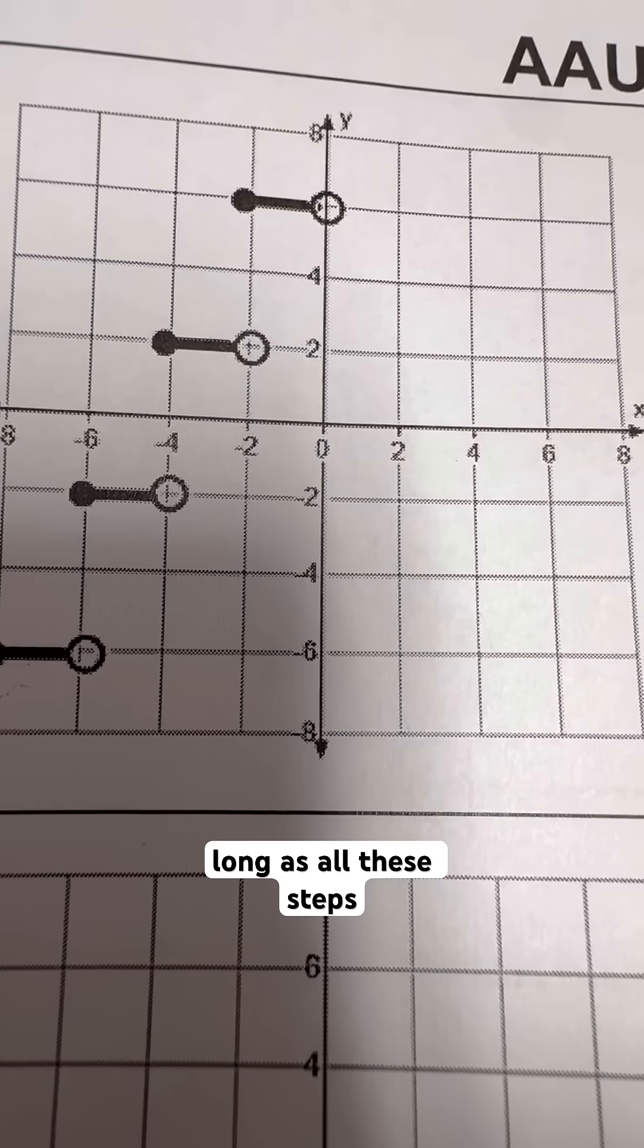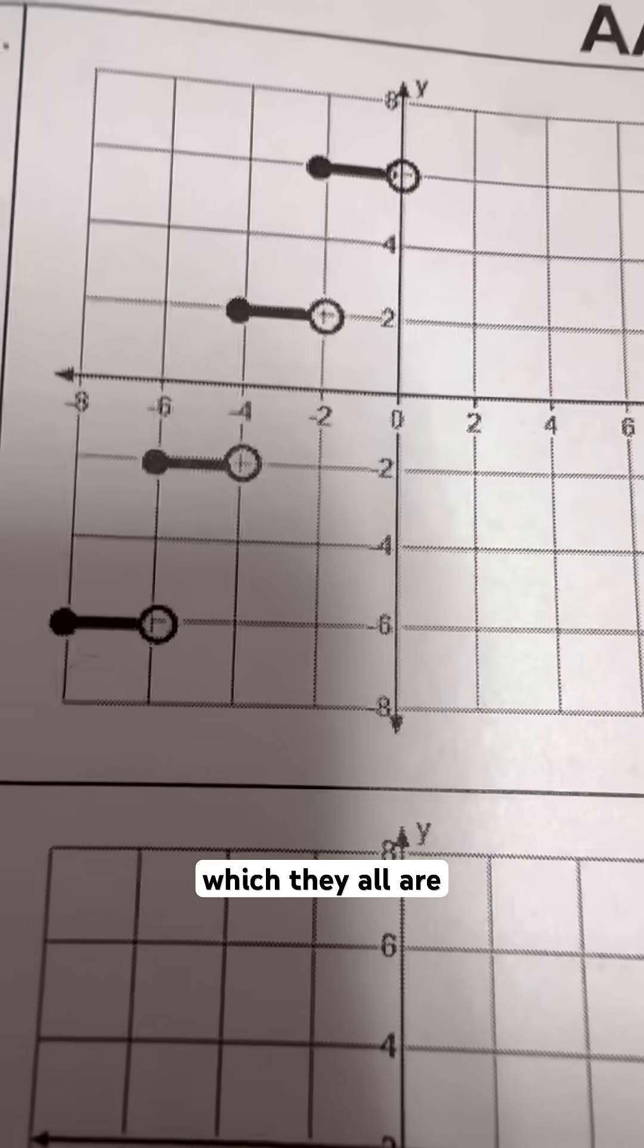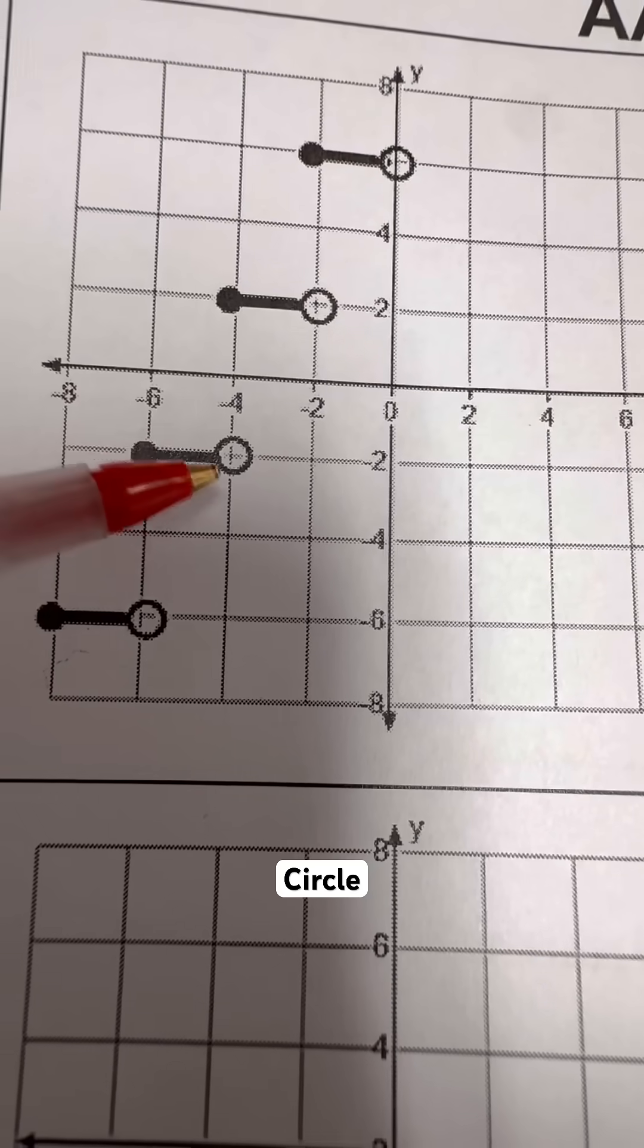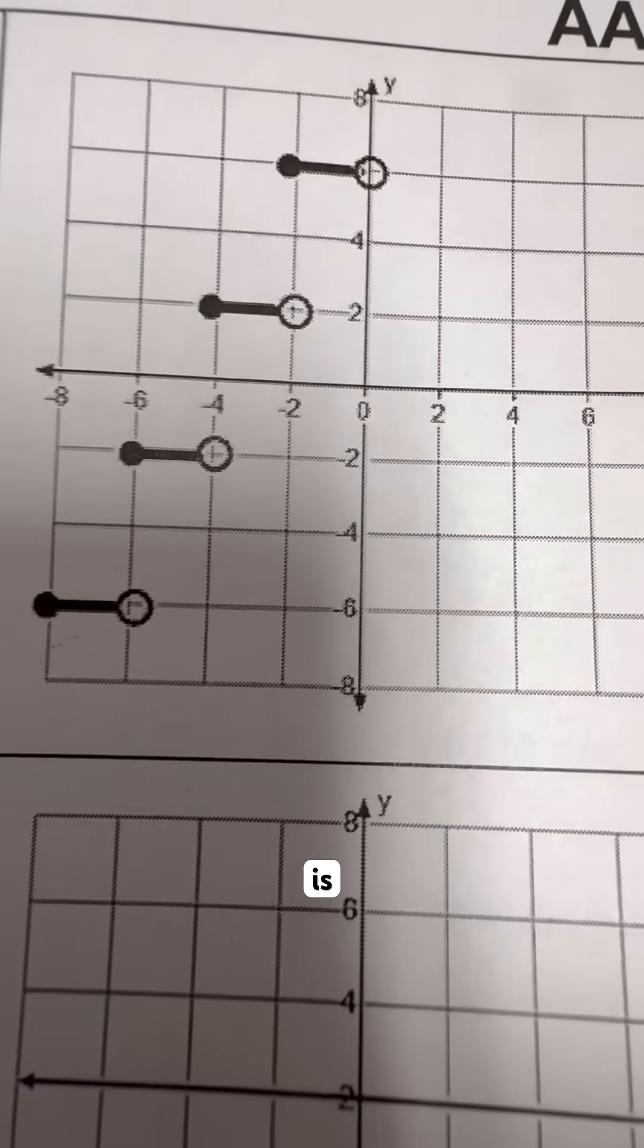So as long as all of these steps, which they all are, ending in open circles while the other one is starting with a closed circle, then that means that this one is actually a function.